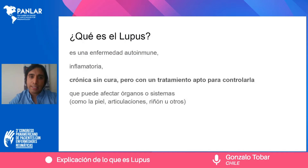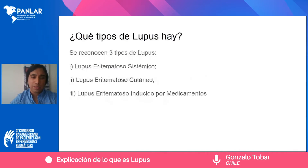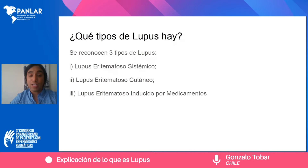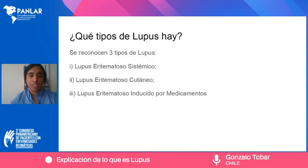¿Qué tipos de lupus hay? Hoy día sabemos que se reconocen tres tipos específicos de lupus. El primero es el lupus eritematoso sistémico, que es aquel lupus que tiene el 80% de las personas que tienen algún tipo de lupus en el mundo. Y es el lupus al que nos referimos cuando hablamos de lupus sin ponerle una etiqueta.